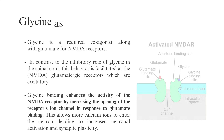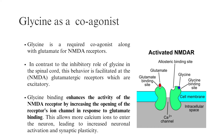Glycine as a Coagonist: Glycine is a required coagonist along with glutamate for NMDA receptors. In contrast to its inhibitory role in the spinal cord, this behavior is facilitated at the NMDA glutamatergic receptors, which are excitatory. Glycine binding enhances the activity of the NMDA receptor by increasing the opening of the receptor's ion channel in response to glutamate binding, allowing more calcium ions to enter the neuron and leading to increased neuronal activation and synaptic plasticity.